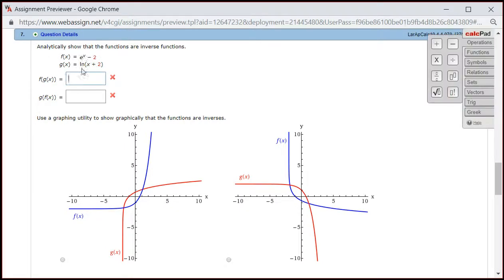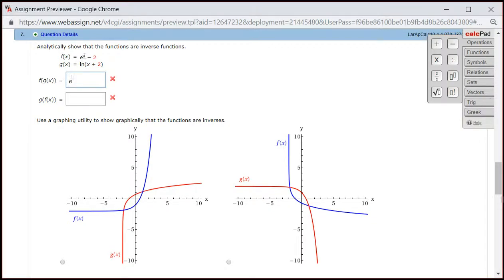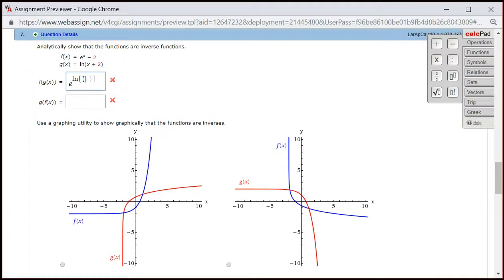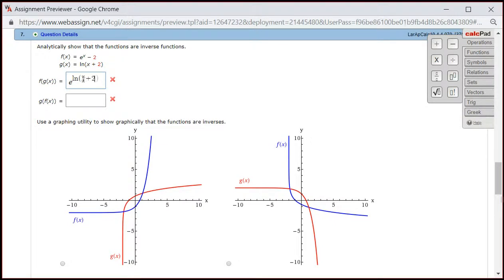So you have e, so I put e here, and then we see x. So we're going to put g of x in there. So you have a natural log of x plus 2, right? Then you have at the end, you're going to have a minus 2, right?